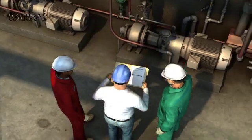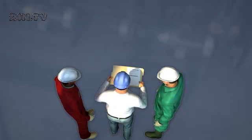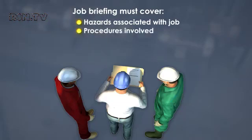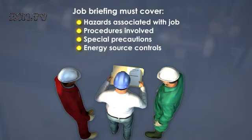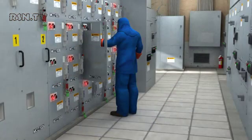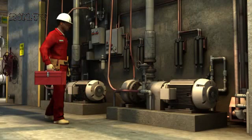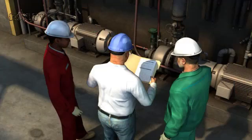The employer is also responsible for briefing employees before performing a new electrical job. The person in charge of the job briefing must cover the following: hazards associated with the job, procedures involved, special precautions, energy source controls, and PPE requirements. If the job is repetitive or routine, briefings may not be necessary before every task, as long as the workers know the relevant information. If a routine job changes in any significant way that could affect safety, then a new job briefing is required.